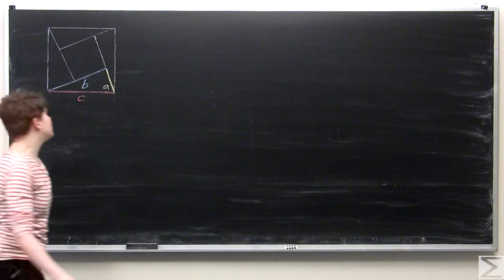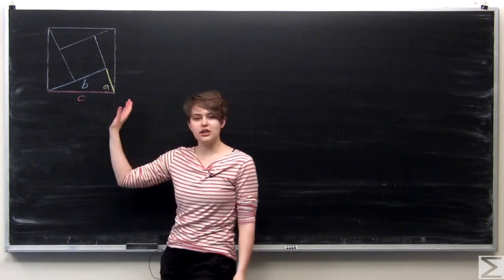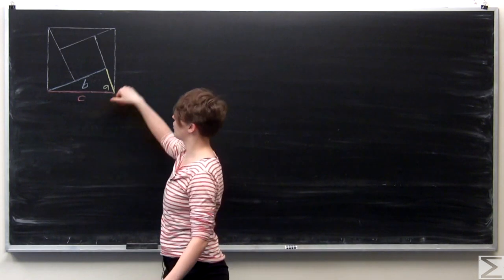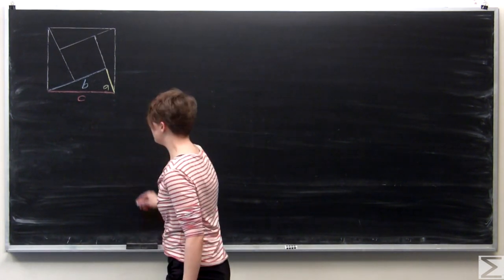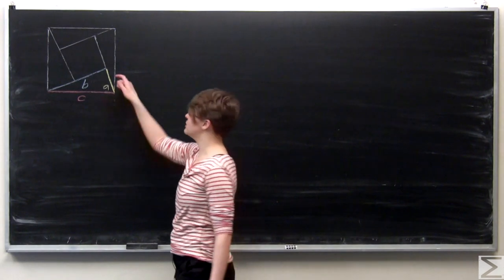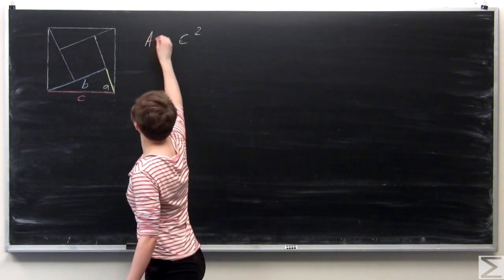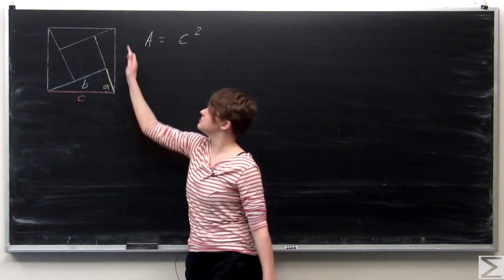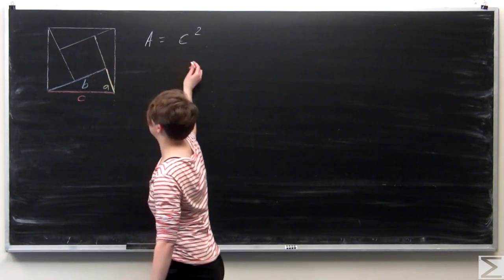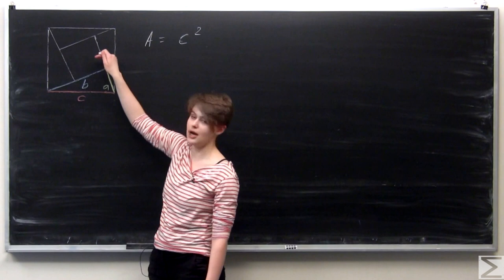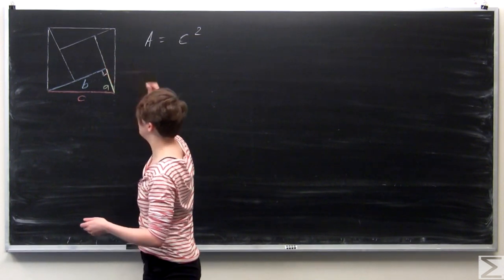Now we can use a slightly modified version of the same diagram. We're going to find two different ways to express the area of the big square on the outside. Here the area of the big square equals C², since it's just base times height — so one expression for the area is C². We can also think of a second way: the area as the sum of the interior inscribed square and the four outer right triangles.